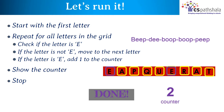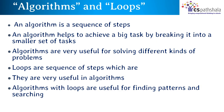We are now done with the algorithm. Let's discuss algorithms and loops. An algorithm is a sequence of steps that helps achieve a big task by breaking it into a smaller set of tasks. Algorithms are very useful for solving different kinds of problems. Loops are a sequence of steps which are repeated — they are very useful in algorithms. Algorithms with loops are useful for finding patterns and searching.